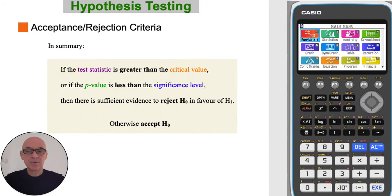To remind you of the acceptance-rejection criteria, if the test statistic is greater than the critical value or if the p-value is less than the significance level, then there is sufficient evidence to reject the null hypothesis H0. Otherwise we accept the null hypothesis.